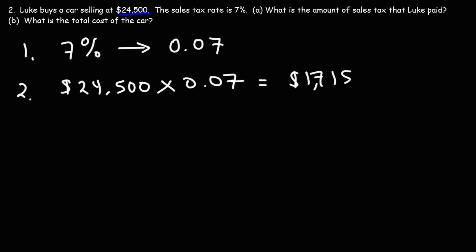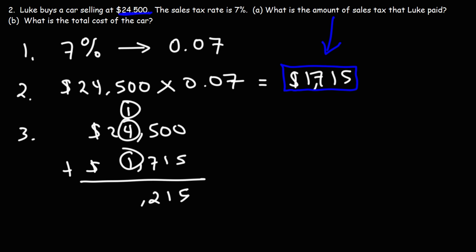Now, part B, what is the total cost of the car? So that includes the original price and the sales tax, which is the answer for part A. So in step three, we're going to add those two things. So it's $24,500 plus $1,715. 0 plus 5 is 5. This is going to be 1. 5 plus 7, that's 12. Carry over the 1. 1 plus 4 plus 1 is 6. And then we can bring down the 2.